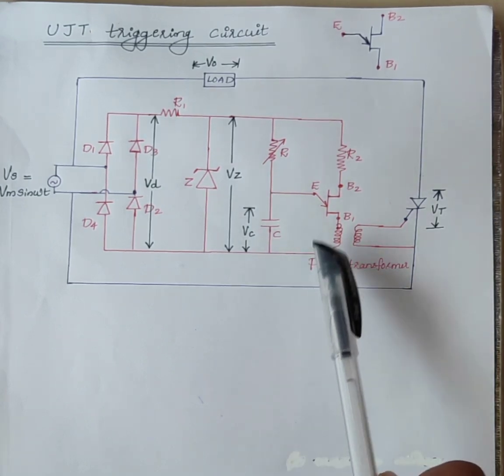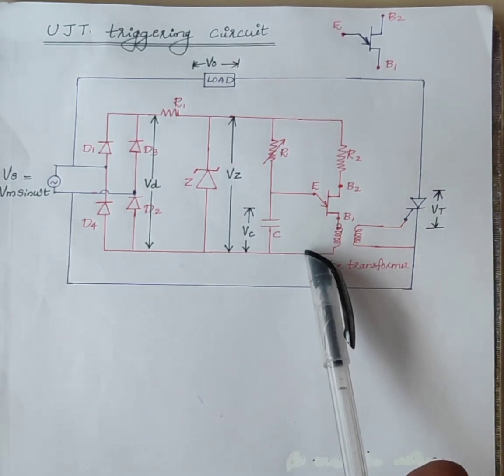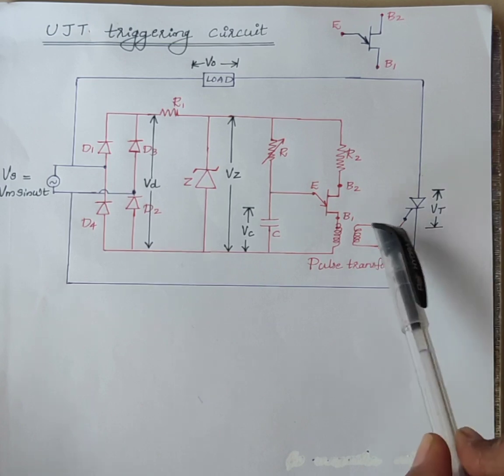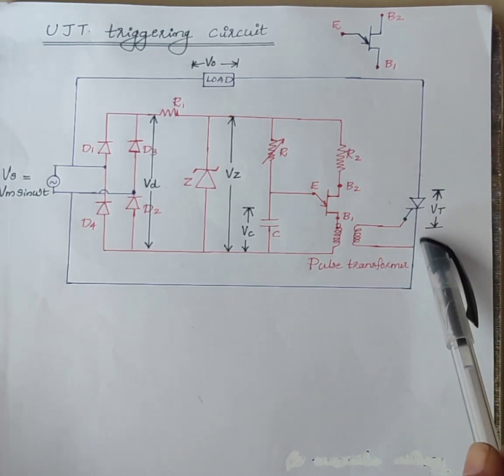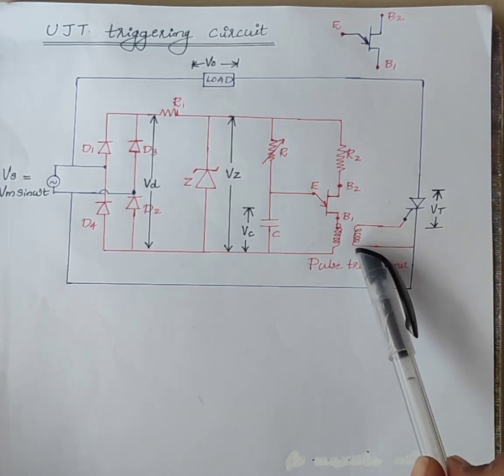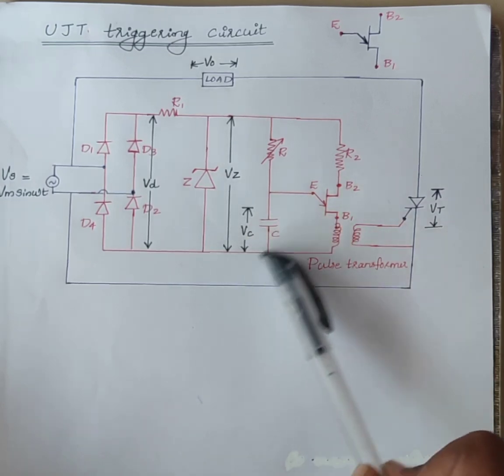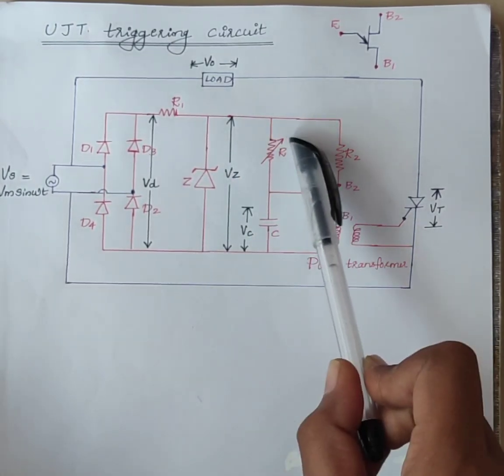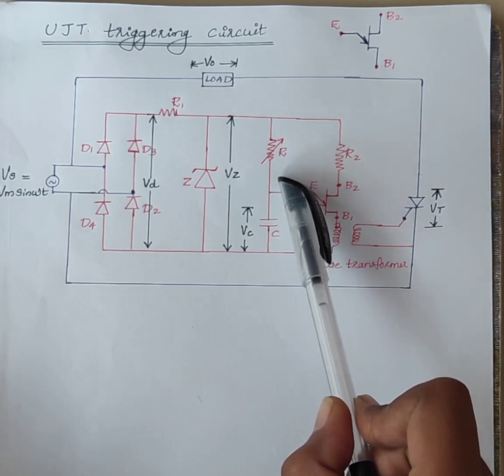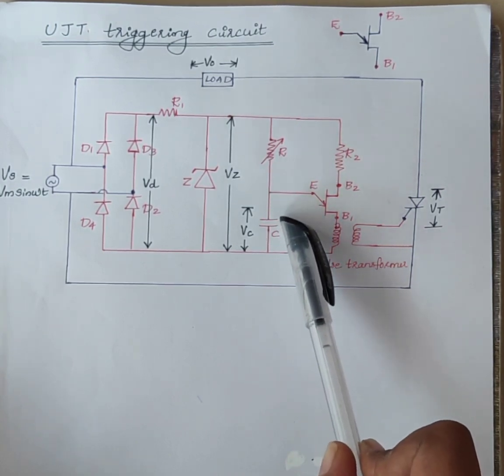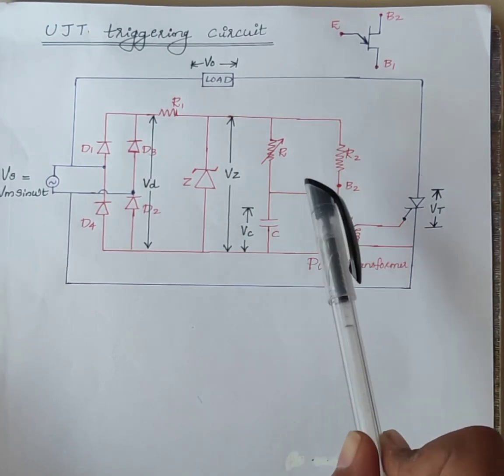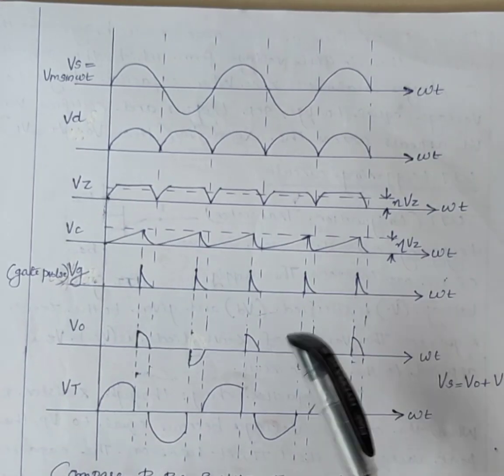Therefore, a pulse is produced at the primary as well as at the secondary of pulse transformer. This pulse acts as gate triggering pulse of SCR. The charging of the capacitor can be varied by varying the value of resistance R. And therefore, the firing angle can be controlled from 0 to 180 degrees.